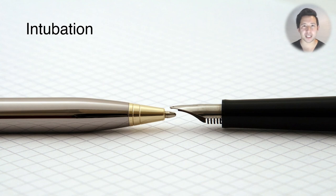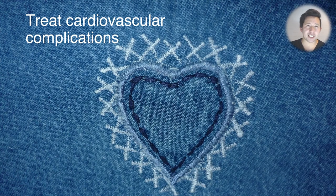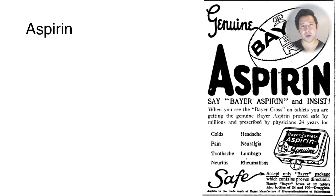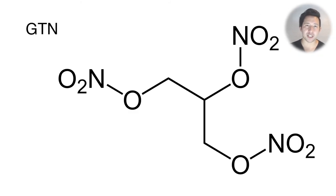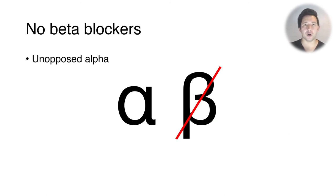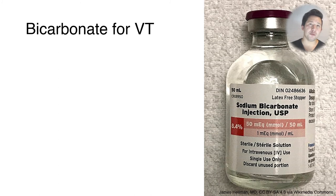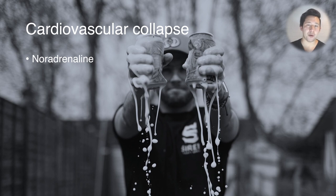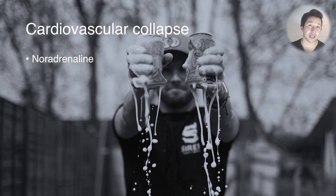Cardiovascular complications must be treated. For an AMI, give aspirin, nitrates, and analgesia. Avoid beta-blockers, because blocking only the beta adrenoreceptors leaves unopposed action at the alpha adrenoreceptors, causing significant hypertension that is very difficult to manage once a beta-blocker has been given. If someone goes into VT, remember it's often due to sodium channel blockade, so the treatment involves giving sodium bicarbonate. For cardiovascular collapse with hypotension leading to shock, use a vasopressor like noradrenaline to maintain perfusion.